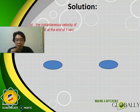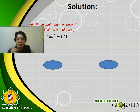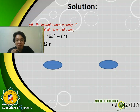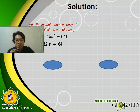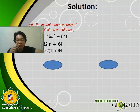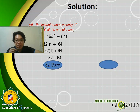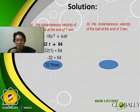Solution for part A — the instantaneous velocity at the end of 1 second. Write the equation of motion: S = −16T² + 64T. Get its derivative: dS/dT = −32T + 64. Since T = 1 second, substitute: −32(1) + 64 = −32 + 64 = 32 feet per second. So at the end of 1 second, the ball is rising with an instantaneous velocity of 32 feet per second.